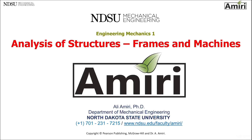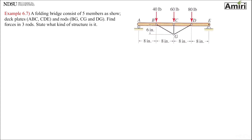Hello. I will have some examples on analysis of frames and machines and drawing their free body diagrams. The first example: a folding bridge consists of five members as shown — deck plates A, B, C, D, E, and rods BG, CG, and DG. Find forces in three rods and state what kind of structure it is.